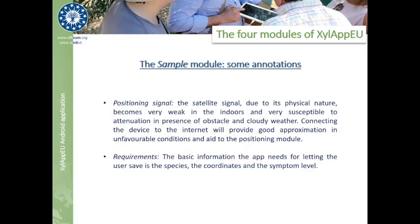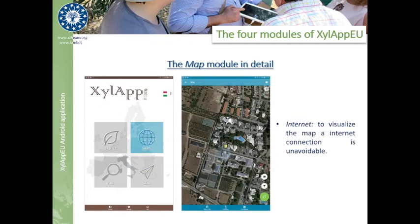As an addendum to the usability of the app, we need to remember that the satellite signal, due to its physical nature, becomes very weak indoors and is very susceptible to attenuation in the presence of obstacles and cloudy weather. Connecting the device to the internet will provide a good approximation in unfavorable conditions and aids to the positioning module. The basic information the app needs for letting the user save is the species, the coordinates, and the symptom level.